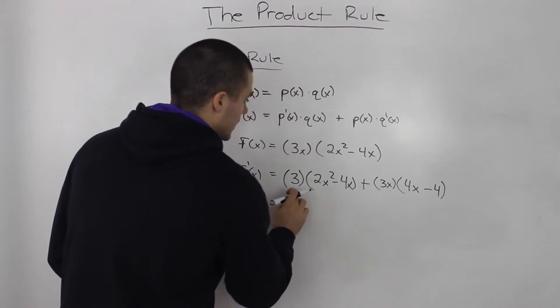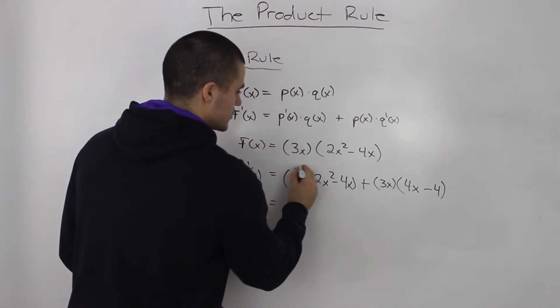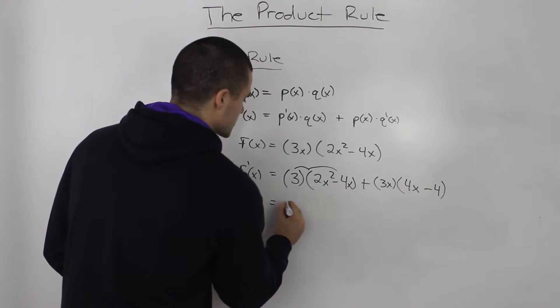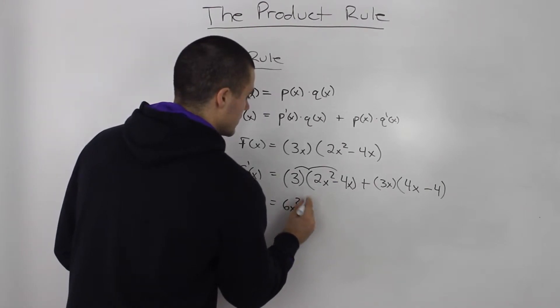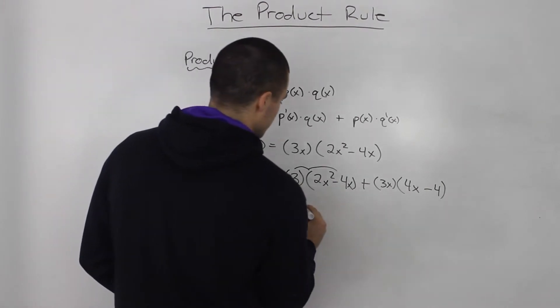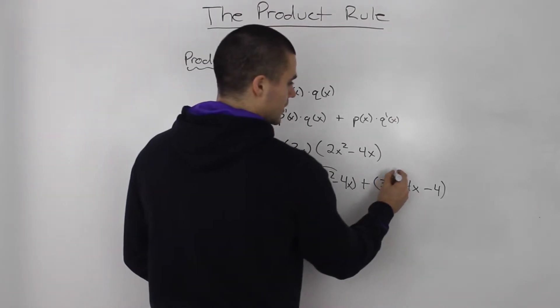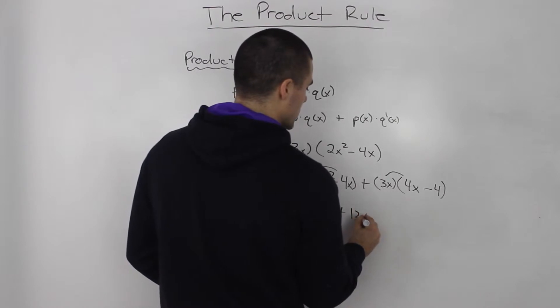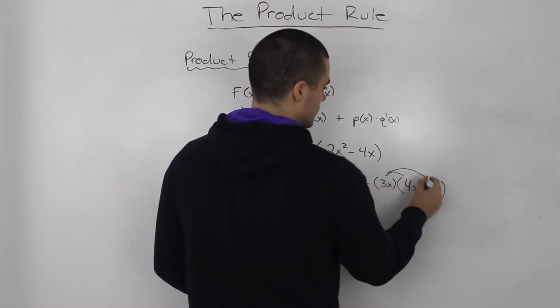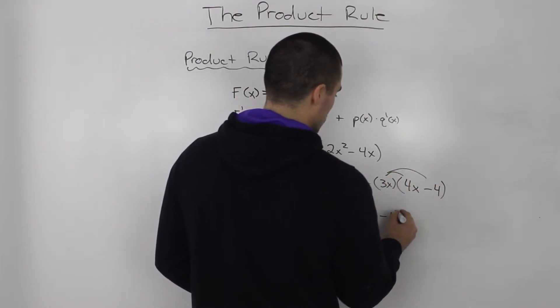And then we distribute this 3 inside. So, 3 times 2x squared, that's 6x squared. And then 3 times negative 4x is just negative 12x. 3x times 4x is 12x squared. And then 3x times negative 4 is negative 12x.